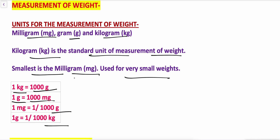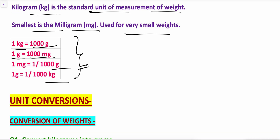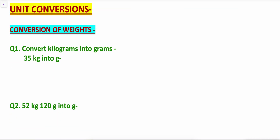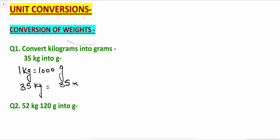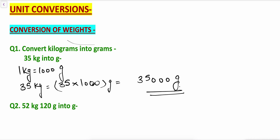Just remember this conversion to solve the numericals on measurement of weight. Let's begin unit conversion — conversion of weight. First: convert kilogram into gram. As we know, 1 kilogram equals 1000 grams, so 35 kilograms will be 35 multiplied by 1000 grams, which equals 35000 grams. This is the conversion.